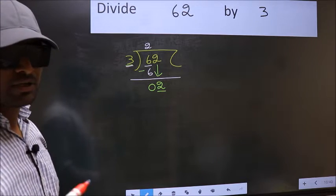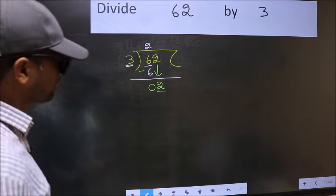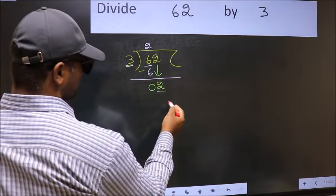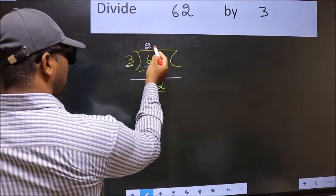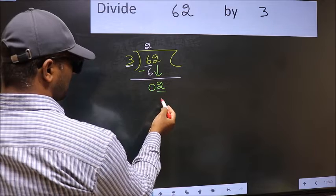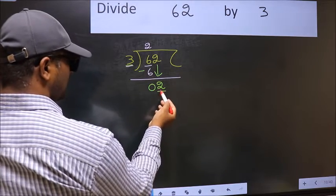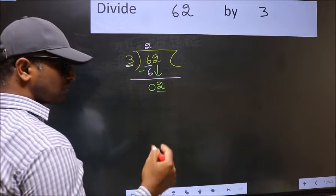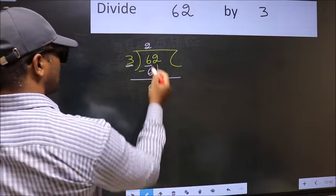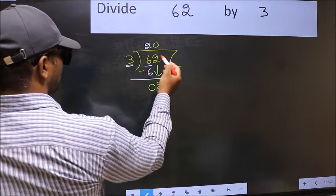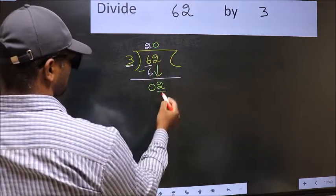Instead, what you should think of is: what number should we write here? If I take 1 here, I get 3 here. But 3 is larger than 2. So what we should do is take 0. So 3 into 0 is 0.